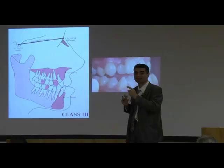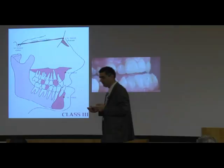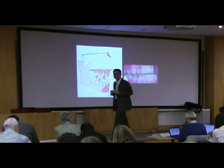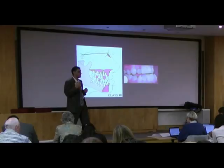Skeletal 3B means the maxilla is where it should be, but the mandible is too big. Normally that is a genetic tendency, and that's a patient you would not touch until their mandible stops growing. That patient will normally require orthognathic surgery.